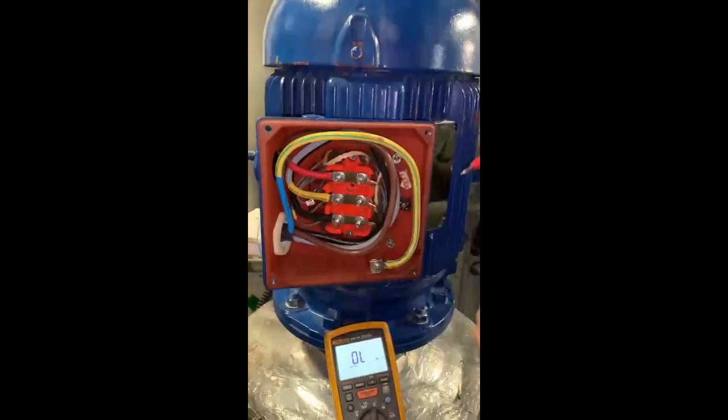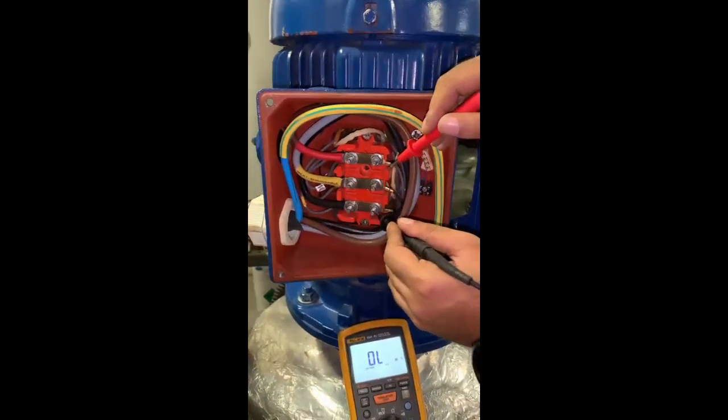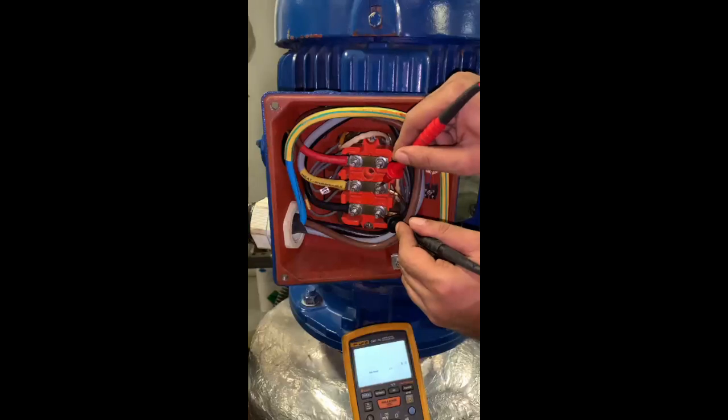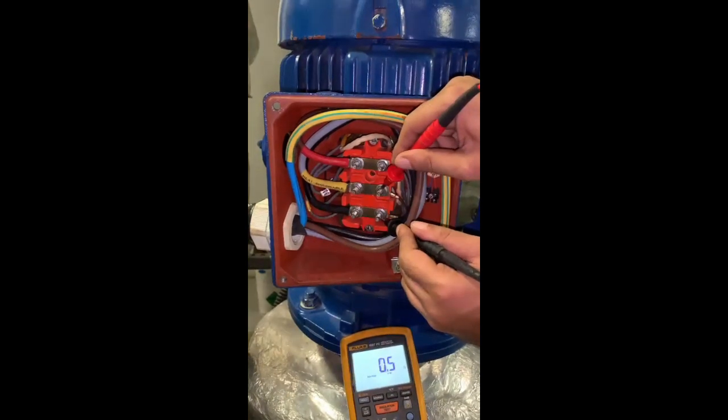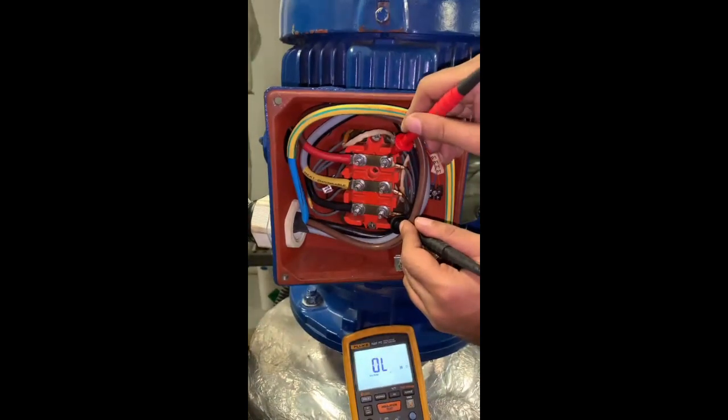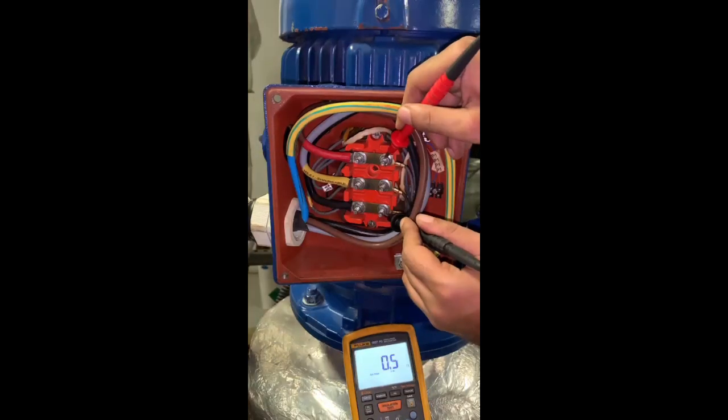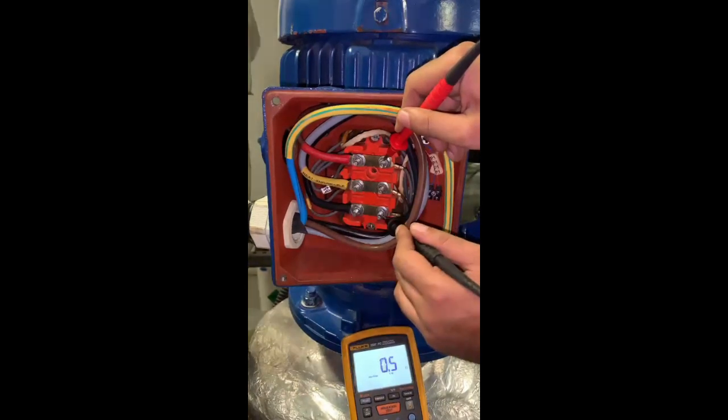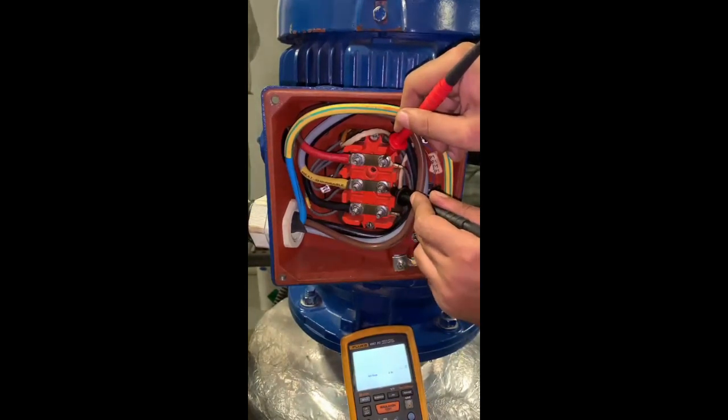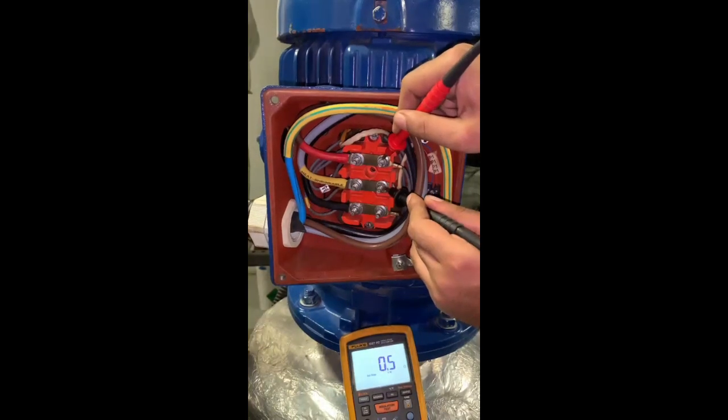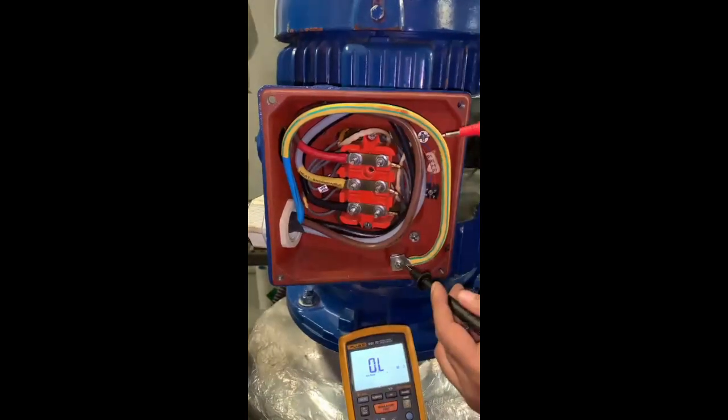As shown in the example, terminal V1 and W1 shows a resistance of 0.5 ohms, terminal U1 and W1 shows a resistance of 0.5 ohms, and terminal U1 and V1 also shows a resistance of 0.5 ohms. This shows good winding health.